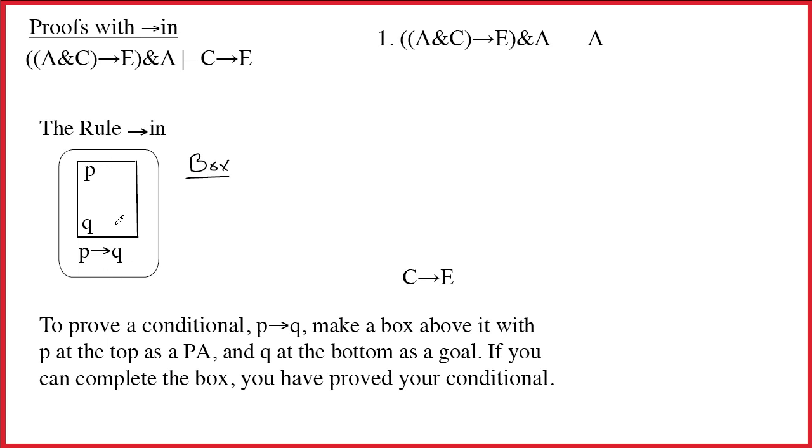In order to do that, you have to set up a box that starts with P and goes to Q. In effect, what you're showing is that if you gave me P, if we pretended that P was true, then we could get to Q.